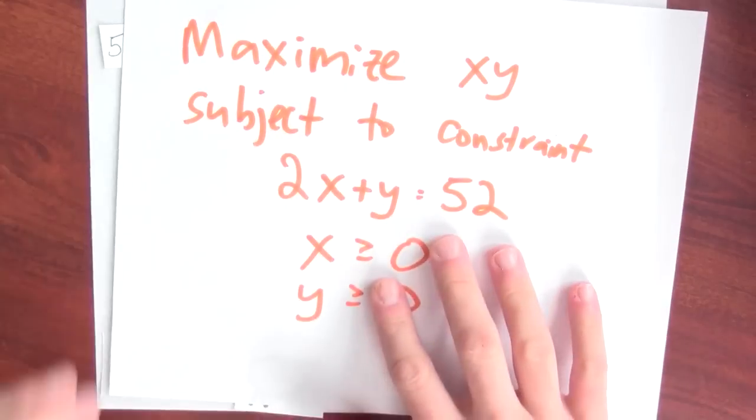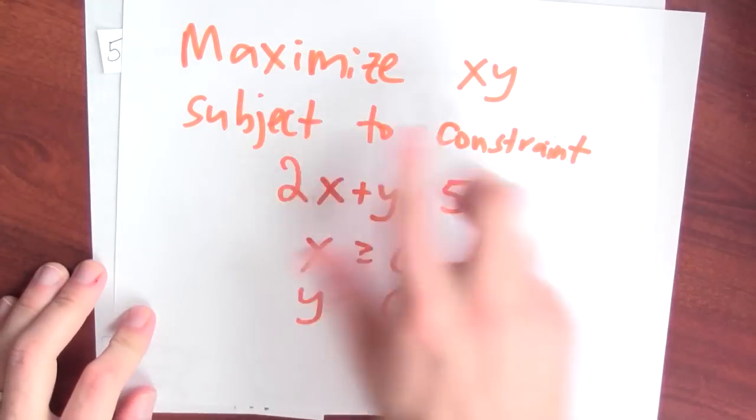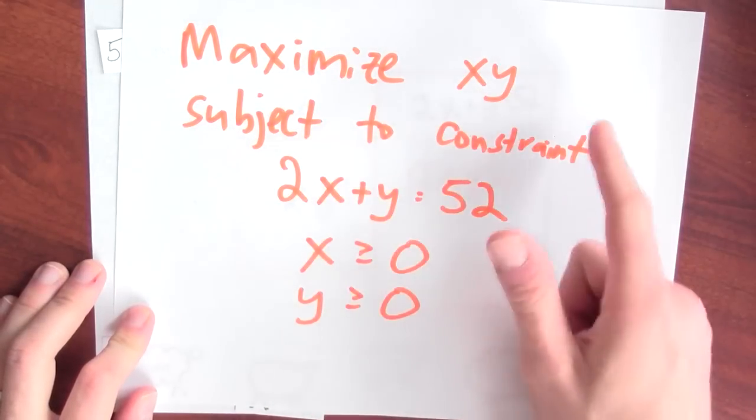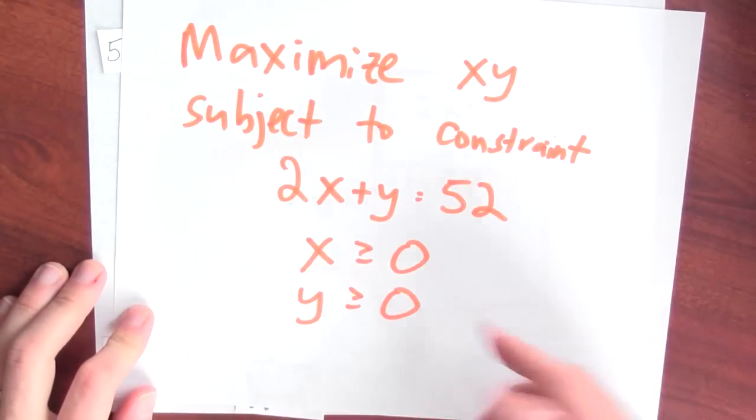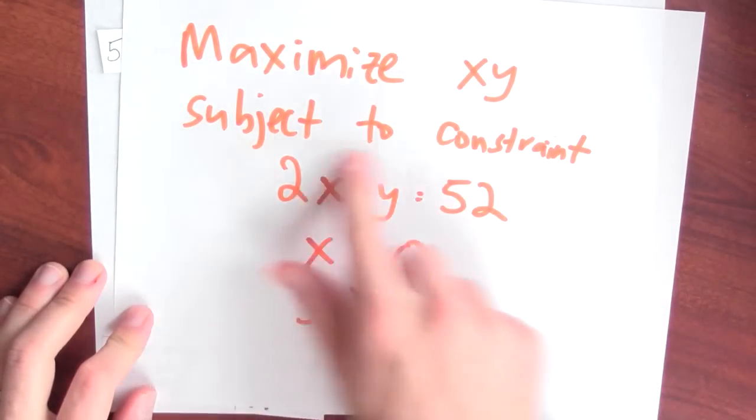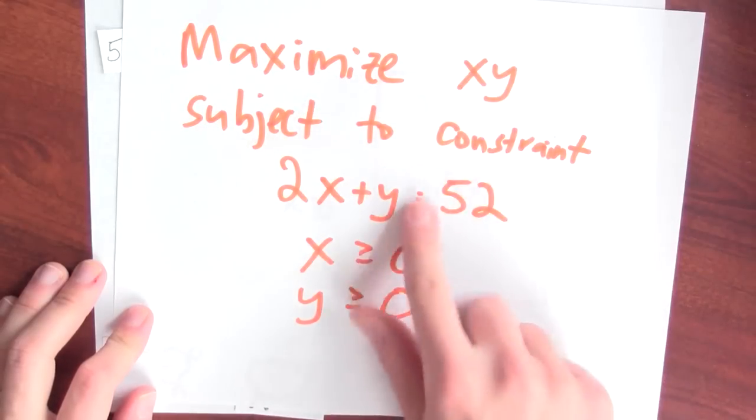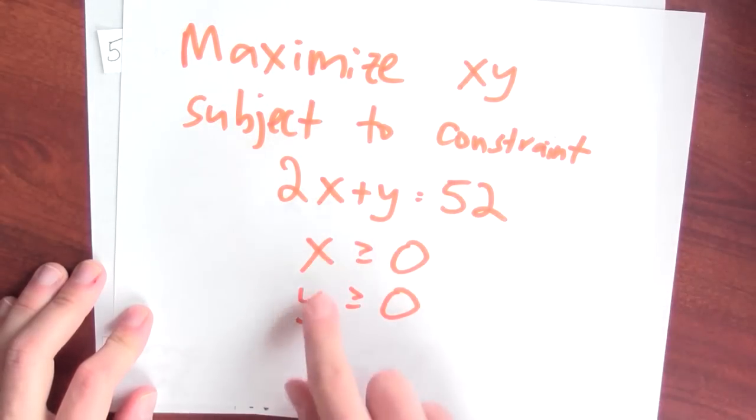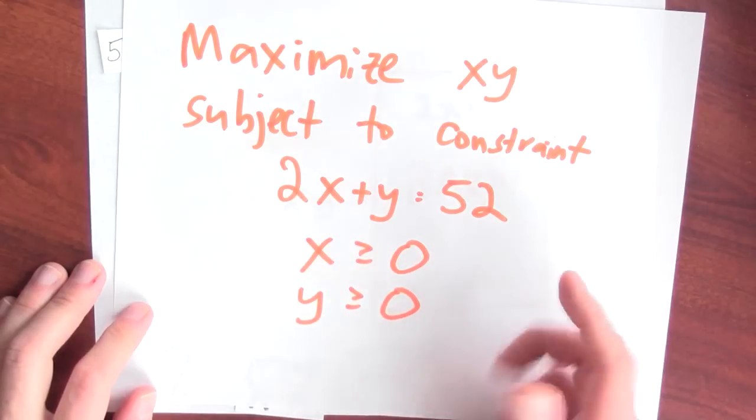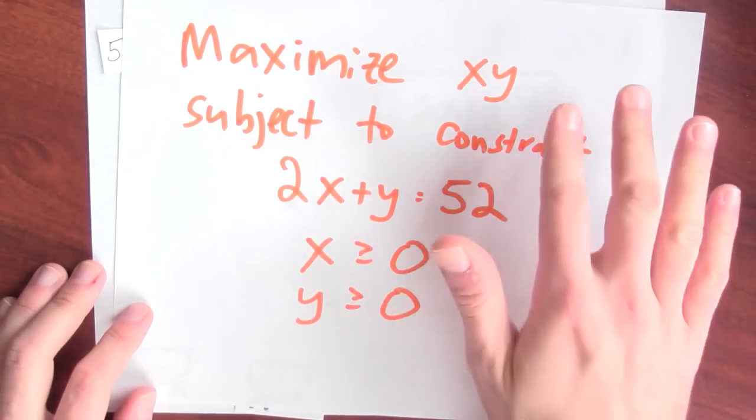I'm saying equal 52 because I might as well use all of the fence that I have to build this sheep pen. Another way to say that is I'm trying to maximize this quantity, the area of the pen, subject to the constraint that 2x plus y, the length of fence in my pen, is 52 meters. And I should also say that x and y are non-negative quantities. It doesn't make any sense to make one side of my sheep pen negative.